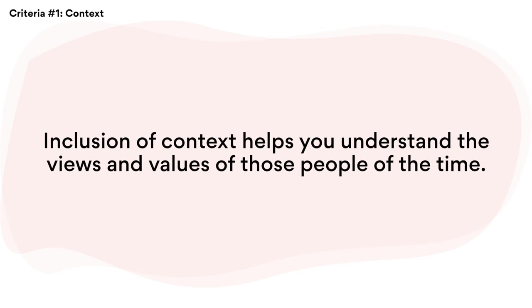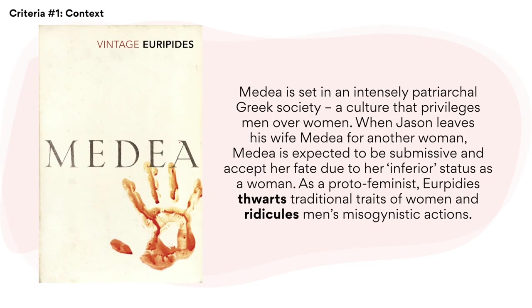So how does this translate into something meaningful in your essay? Inclusion of context helps you understand the views and values of those people of the time. I'm going to switch texts and give you an example for the text Medea. Medea is set in an intensely patriarchal society, a culture that privileges men over women. When Jason leaves his wife Medea for another woman, Medea is expected to be submissive and accept her fate due to her inferior status as a woman. As a proto-feminist, Euripides, the author, fights traditional traits of women and ridicules men's misogynistic actions.